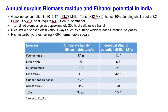If I give some numbers: 1 tonne of dried biomass shall approximately give us 250 litres of cellulosic ethanol. The remaining will go to lignin and hemicellulose, because the cellulosic part is easy — you convert cellulose through an enzymatic process to glucose and from glucose you do fermentation to get ethanol.